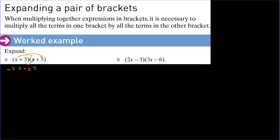Now I start with 3: 3 times x is equal to 3x, and 3 times 5 has to be plus 3 times 5. I put a multiplication sign between all terms and arrange the plus and minus signs according to the sign of each multiplication. When I multiply plus x times plus x, the result should be equal to plus x squared.